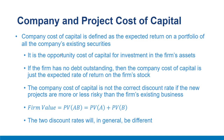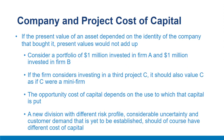Each project should in principle be evaluated at its own opportunity cost of capital — a clear implication of the value additivity principle. For a firm composed of assets A and B, firm value equals the present value of A plus the present value of B. The PVs of A and B are valued as if they were mini-firms in which stockholders could invest directly. Investors value A by discounting at a rate reflecting A's risk, and B at a rate reflecting B's risk; the two discount rates will in general be different. Present values add up.